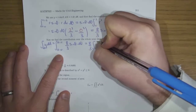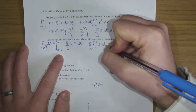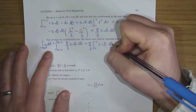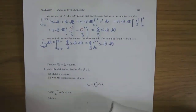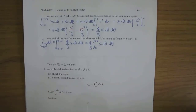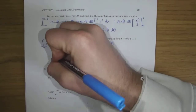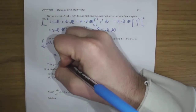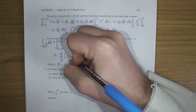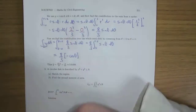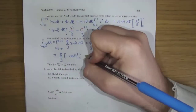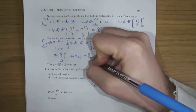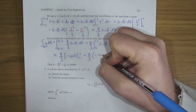Fix the constant eight-thirds and integrate sin θ from zero to π. From the tables, the anti-derivative of sin θ is minus cos θ, going from zero to π. Then top limit minus bottom limit: eight-thirds times [minus cos π minus (minus cos 0)].